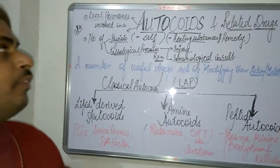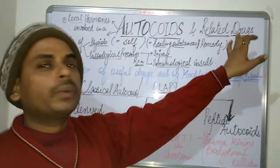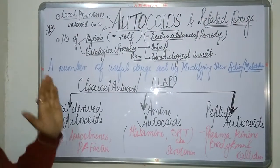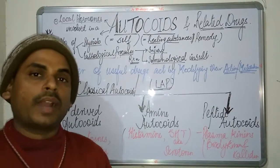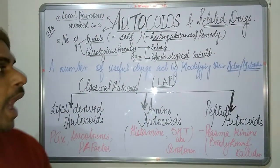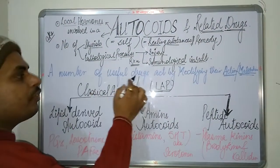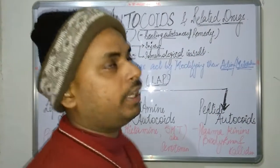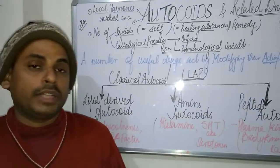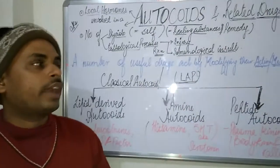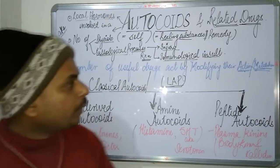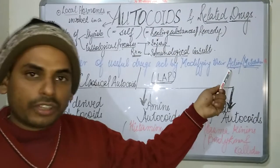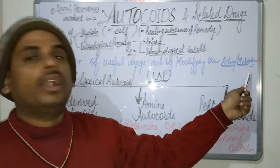There are a number of useful drugs that act by modifying the action and metabolism of autocoids. These related drugs either modify the action of the autocoids or they can alter their metabolism.